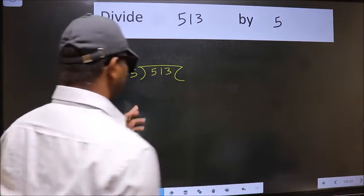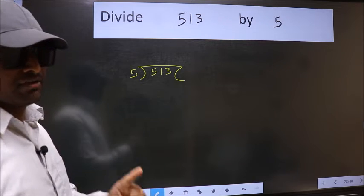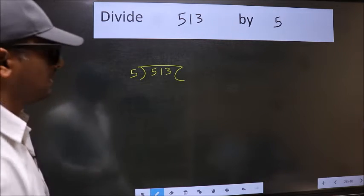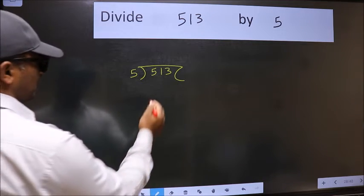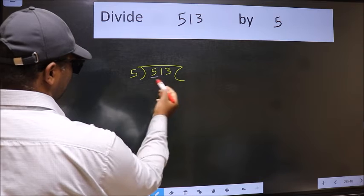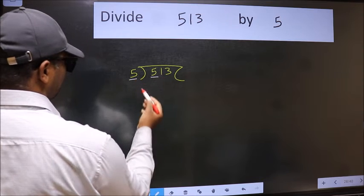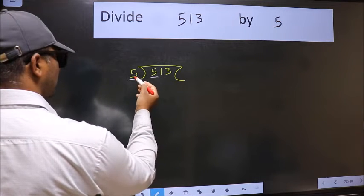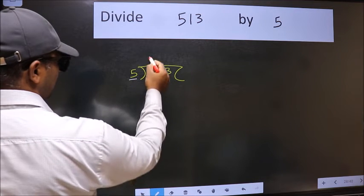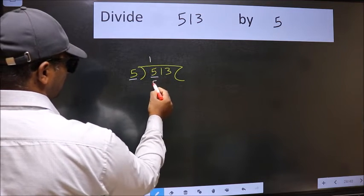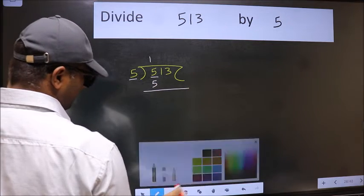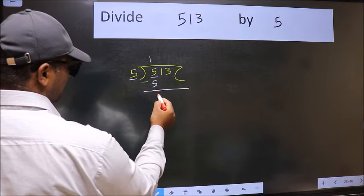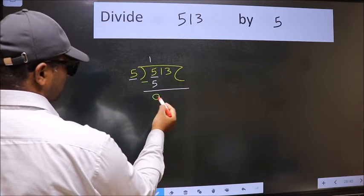This is your step 1. Here we have 5 and here also 5. When do we get 5 in the 5 table? 5 once is 5. Now we should subtract. We get 0.